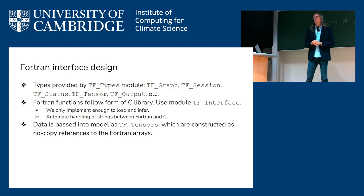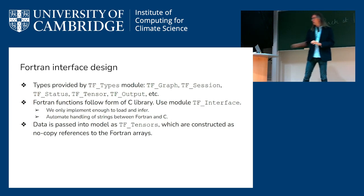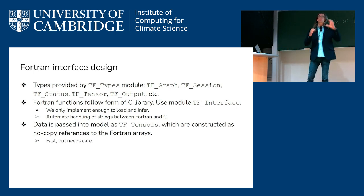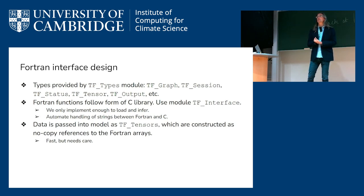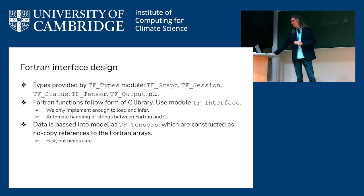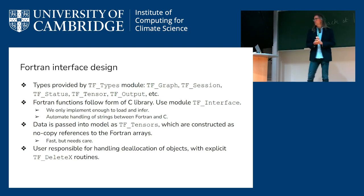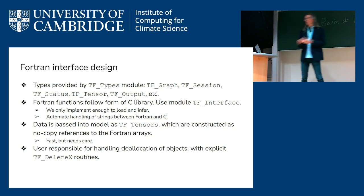When you're passing data into the model to infer, you're using TF tensor types, which we've only implemented as no-copy references to the Fortran arrays. This is performant, but you have to be careful because the Fortran array is the data to the tensor — you don't want to change the underlying Fortran array while you're in TensorFlow or vice versa. And because you're linking into a C library, you are responsible for deallocating the objects. For example, if you made a tensor, you call TF_delete_tensor when you're done with it.